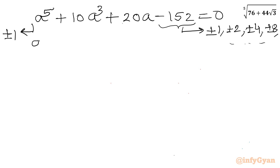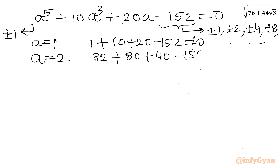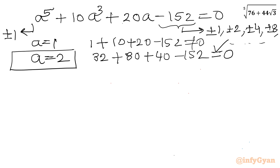Plugging in a equals 1: 1 plus 10 plus 20 minus 152 — no, that does not work. Let us try a equals 2: 2 power 5 is 32, 10 times 2 cubed is 80, 20 times 2 is 40, minus 152. So 32 plus 80 plus 40 minus 152 equals 152 minus 152 equals 0. Yes, it is true! That means a equals 2 is our base solution. Now I will use synthetic division to find the remaining real roots.